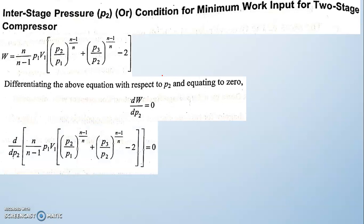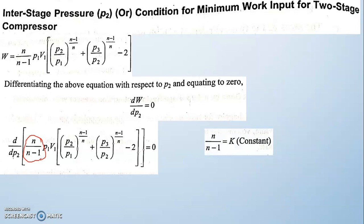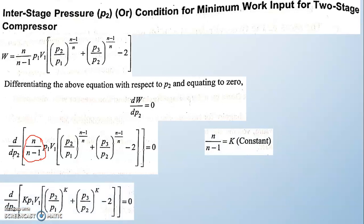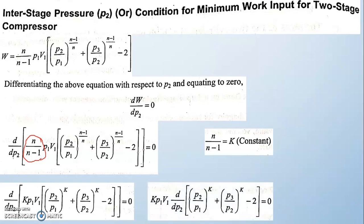We will be writing d/dp2 of n/(n-1) · p1·v1 · [(p2/p1)^((n-1)/n) + (p3/p2)^((n-1)/n) − 2] = 0. Differentiating with respect to p2, all other terms are taken as constant. We only differentiate the two terms p2/p1 and p3/p2. For convenience, we write n/(n-1) as a constant k, so the equation becomes d/dp2 of k·p1·v1·[(p2/p1)^k + (p3/p2)^k − 2] = 0.